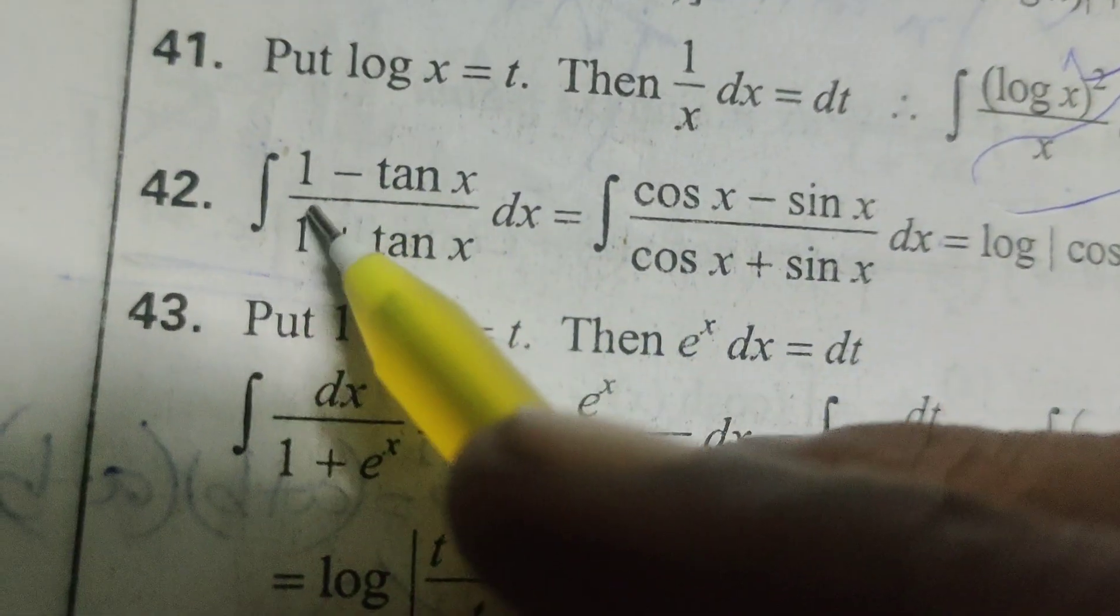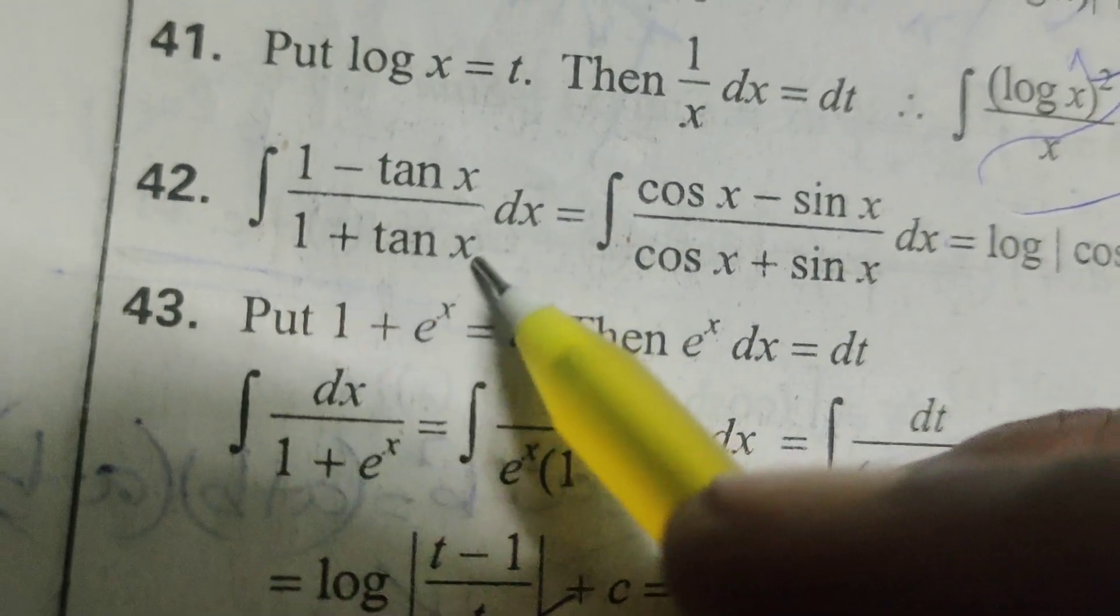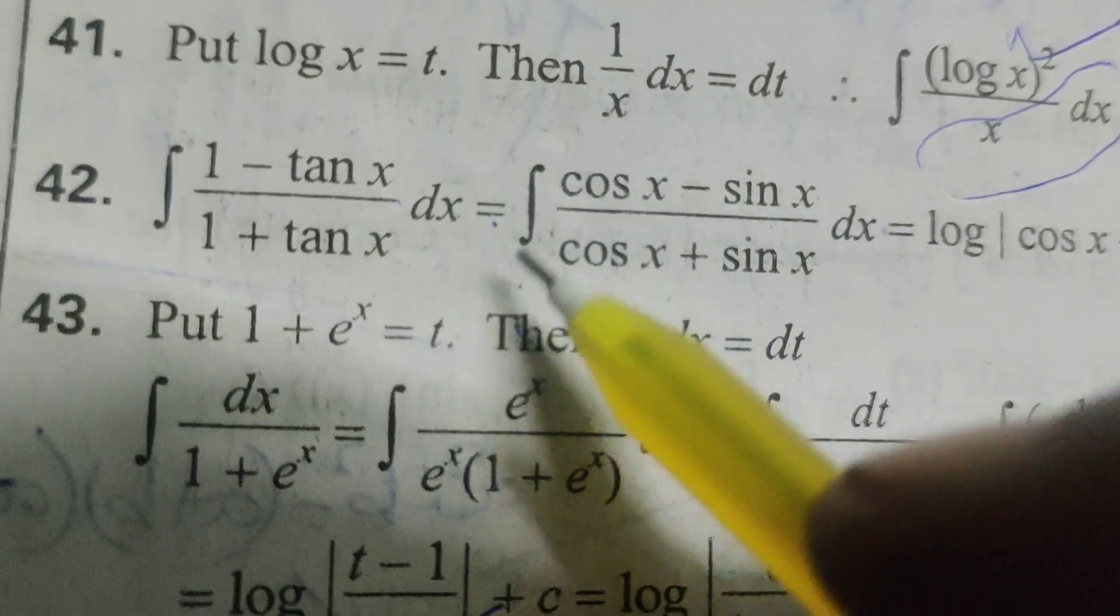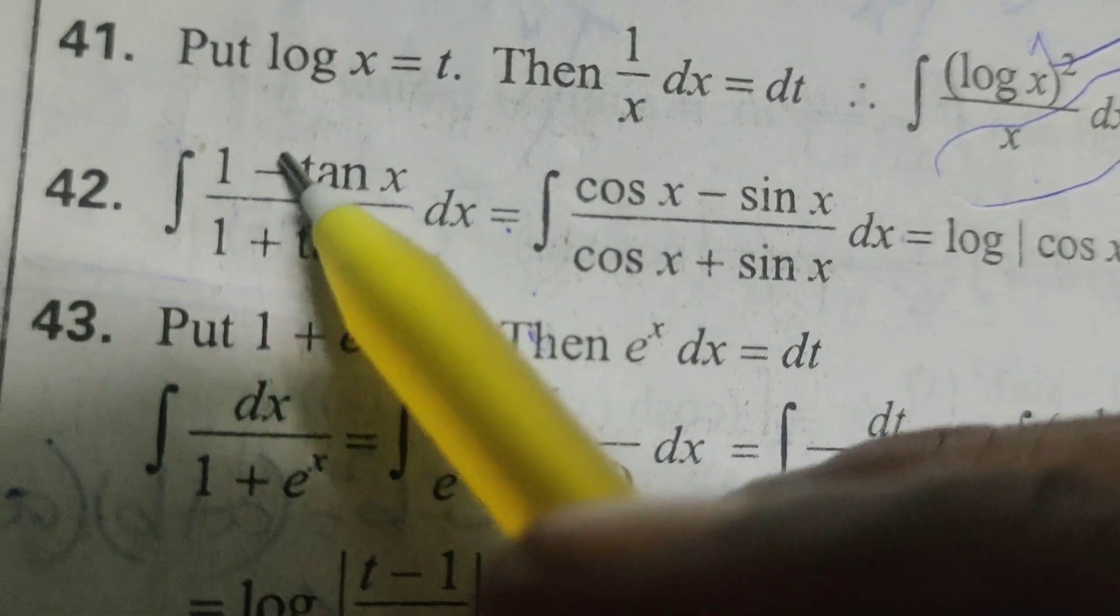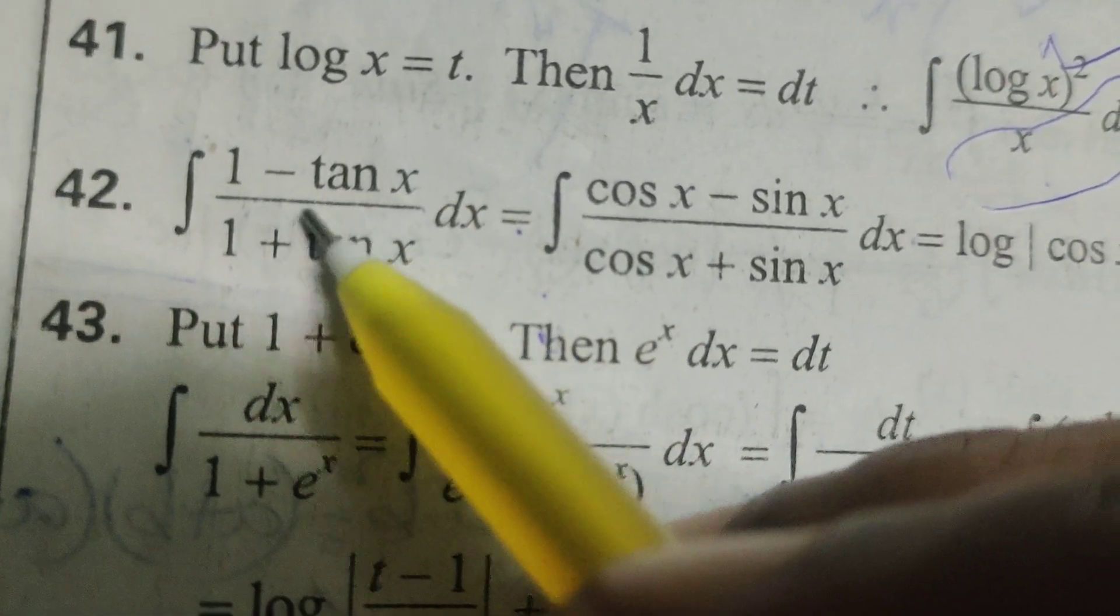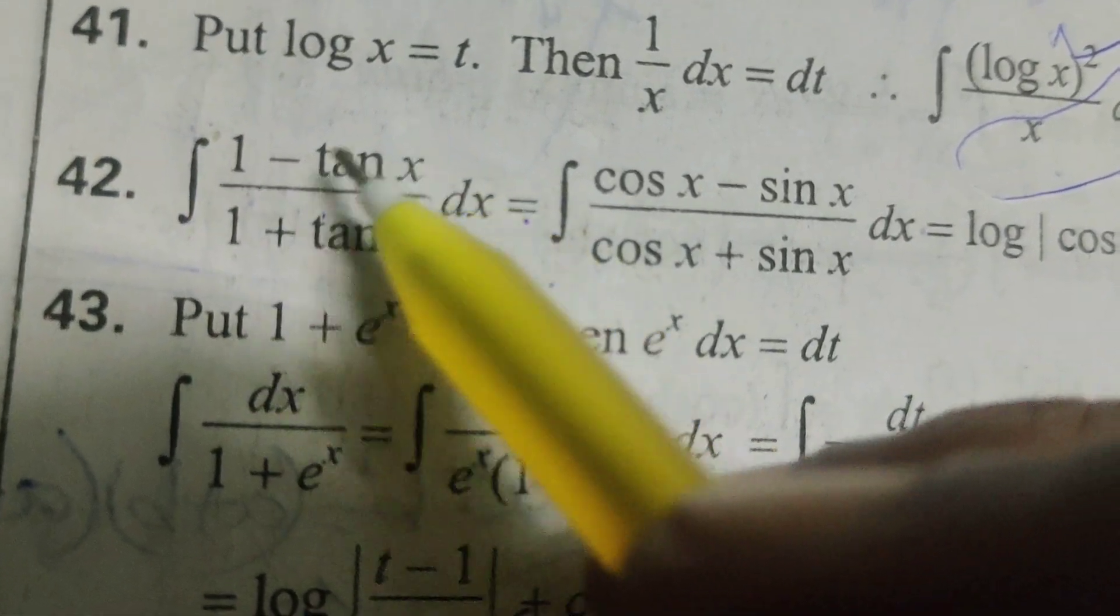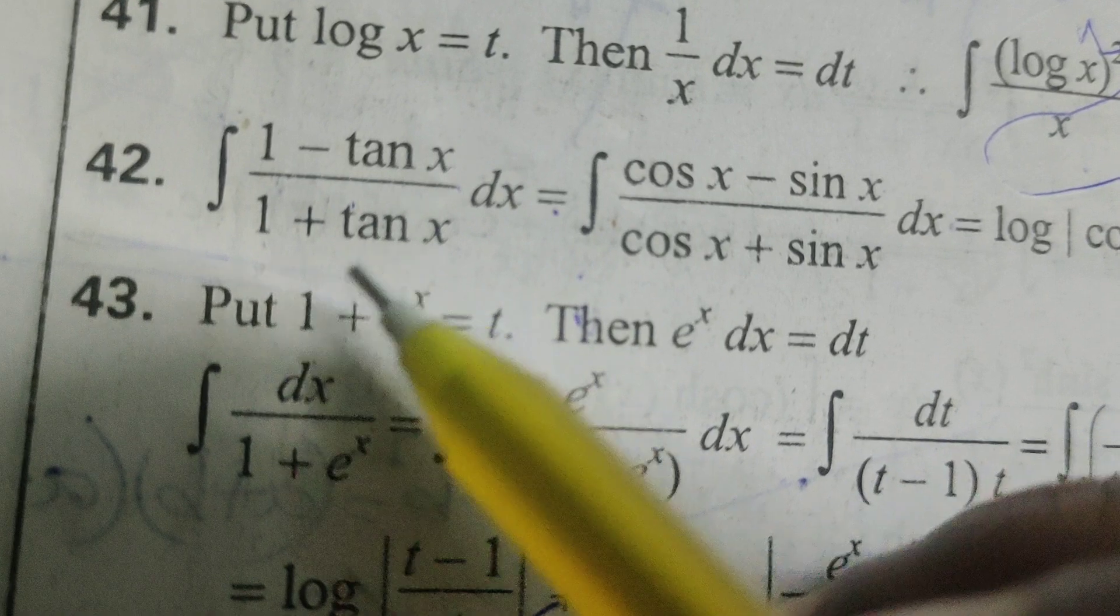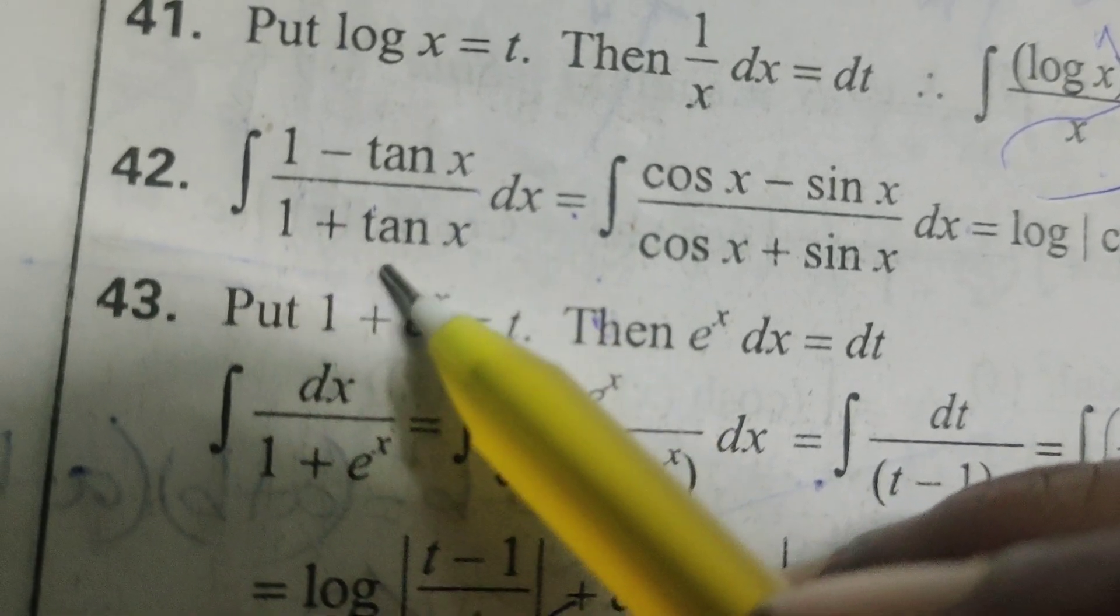Integral of (1 minus tan x) by (1 plus tan x) dx equals to integral of dividing here, this is sin x by cos x. Now cos x minus sin x by cos x. Here also 1 plus sin x by cos x, cos x plus sin x by cos x.